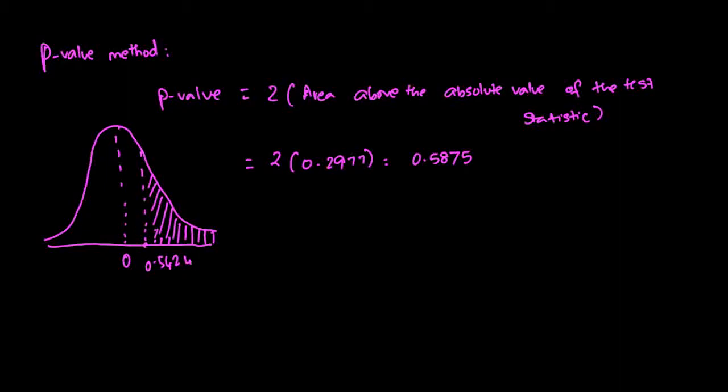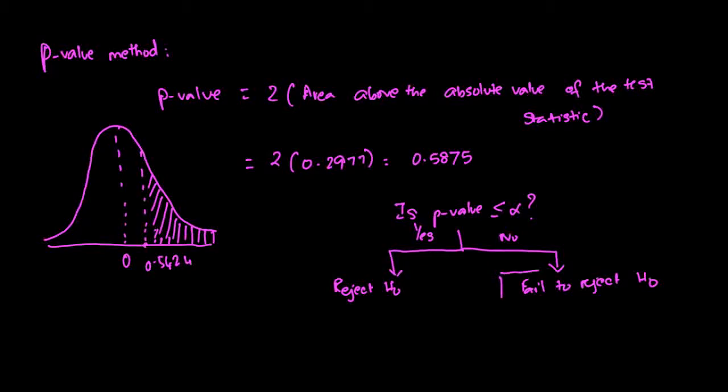If you want to make a decision using the p-value method, all you have to do is ask yourself this question: Is p-value less than or equal to the alpha that we set? If you say yes, you reject null. If you say no, you fail to reject null. The p-value is 0.5875, the alpha is 0.05, so clearly my answer is no.